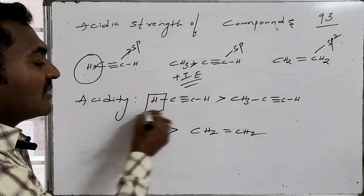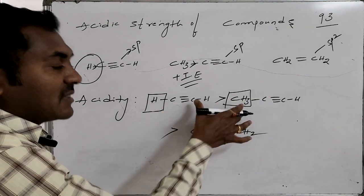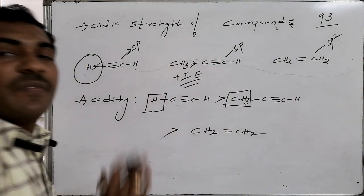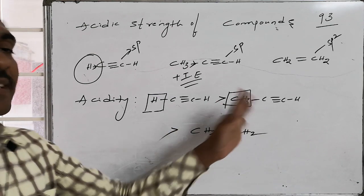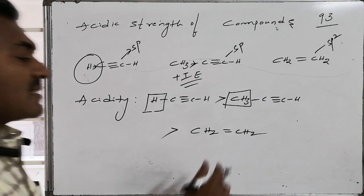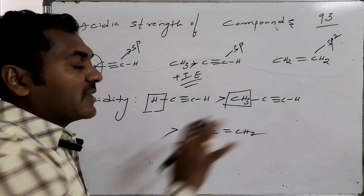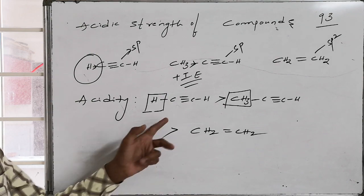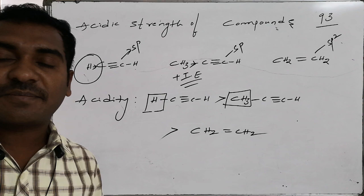To summarize the acidity rationale: in acetylene, the terminal hydrogen is neither on an electron-donating nor withdrawing carbon (pure sp). In methyl acetylene, the positive inductive effect of the methyl group slightly reduces acidity compared to acetylene. Ethene has sp2 hybridization, meaning less electronegativity and less ability to hold electron density, making it the least acidic. Hence the final acidity order is: acetylene > methyl acetylene > ethene.